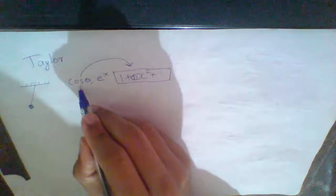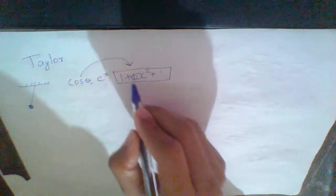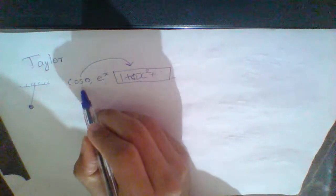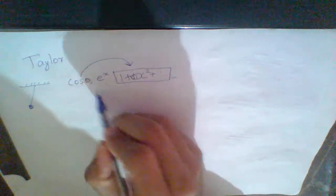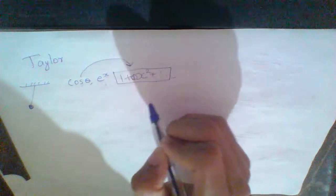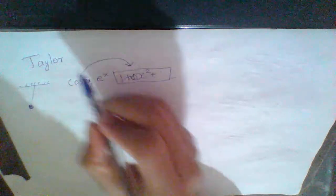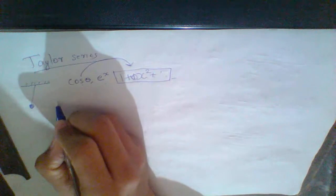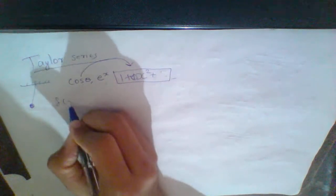We know a function. We can use these functions as polynomials, as an infinite series, and as an approximation. This is a Taylor series. So, we accept all functions as a Taylor series.